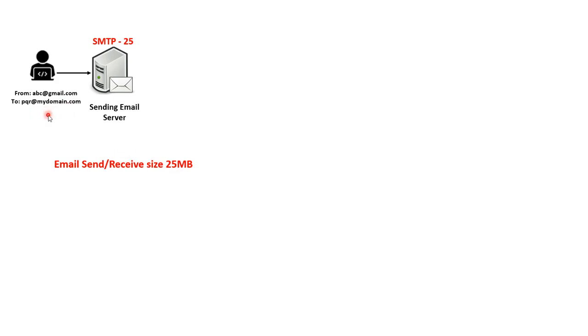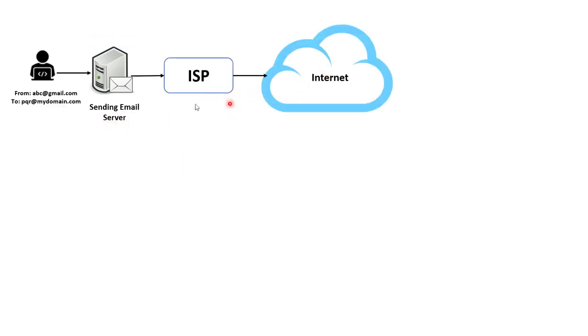After this, the sending email server checks the recipient email address — whether it is internal (a Gmail user) or external. In our case the recipient email address is external, so the sending email server will send this mail to the internet with the help of the local ISP. An ISP, or Internet Service Provider, forms the connection between your sending email server and the internet.